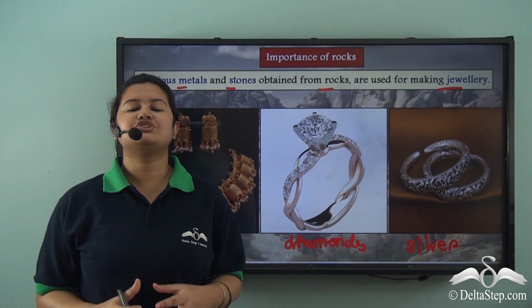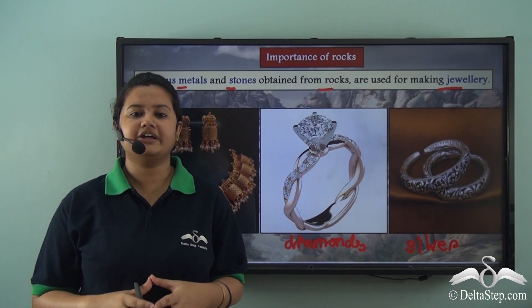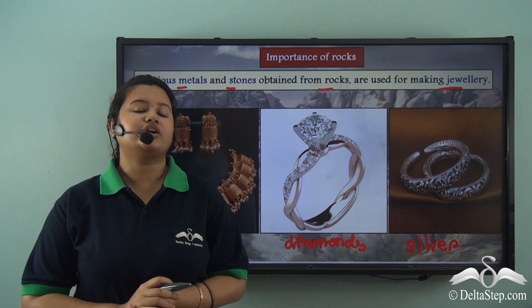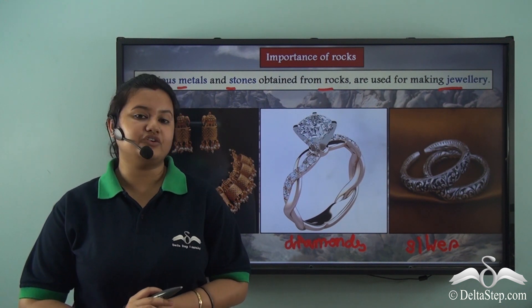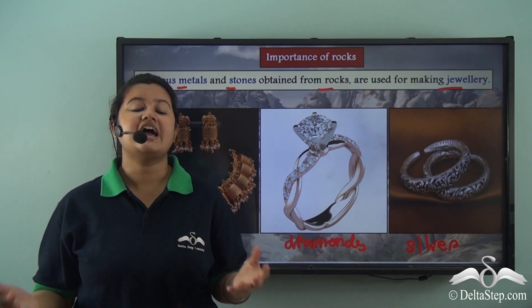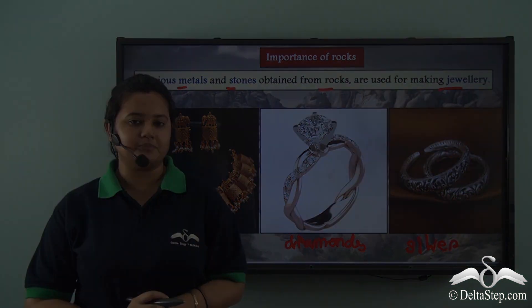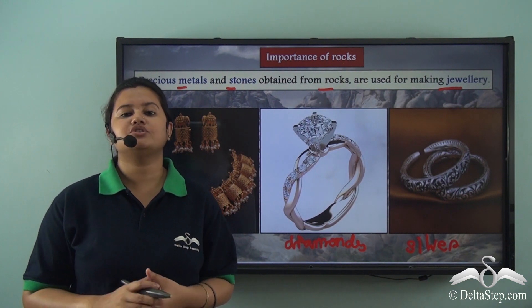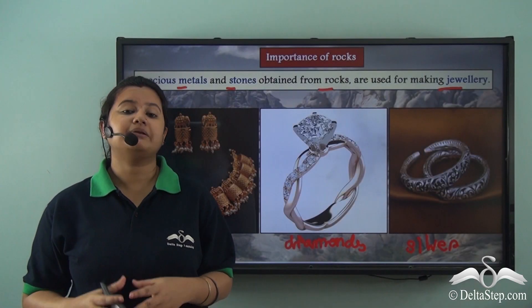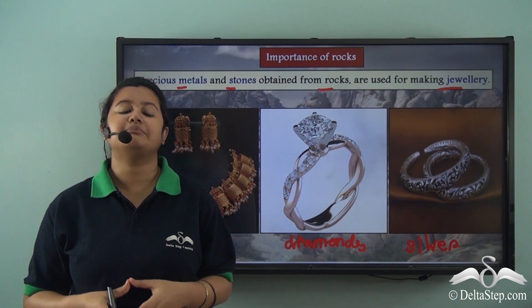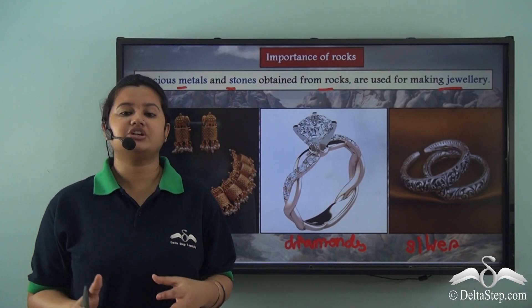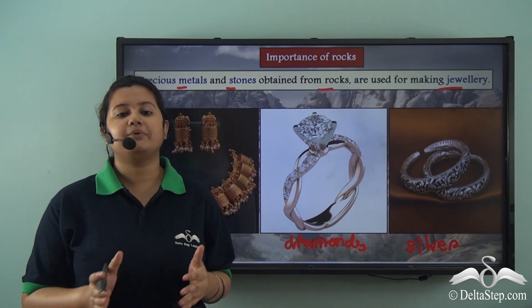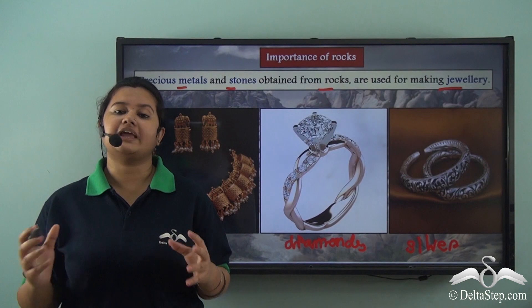In today's video we have learnt about the rock cycle. A rock cycle is a continuous process in which the existing rocks change and new rocks are formed. We also discussed various importance of rocks: minerals obtained from rocks can be used for making jewelry, rocks are used in construction industries, soil can be obtained from rocks, and rocks also provide us with important fuels.